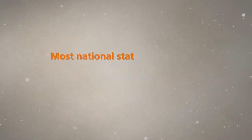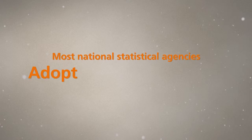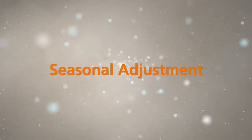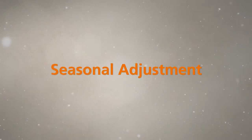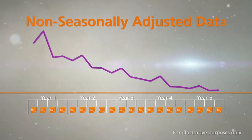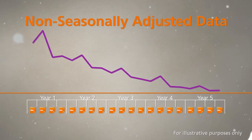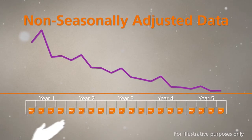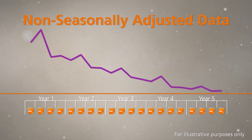To correct for this, most national statistical agencies usually adopt a technique called seasonal adjustment, to remove the seasonal influences so that we can see the underlying trends more clearly.